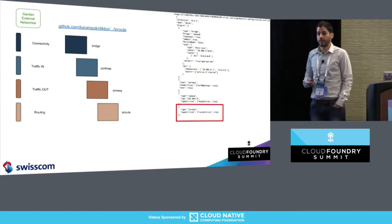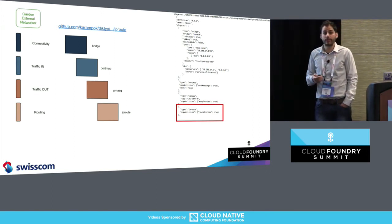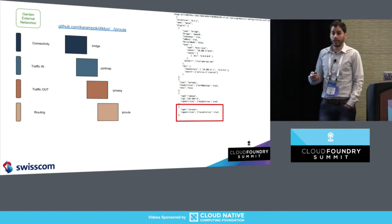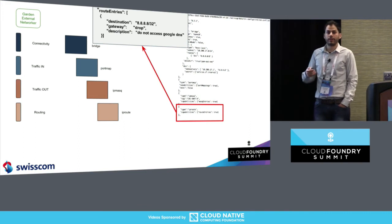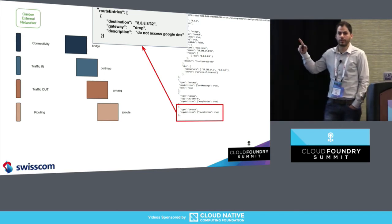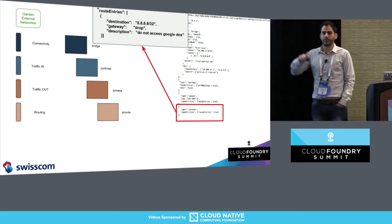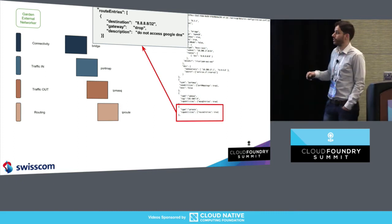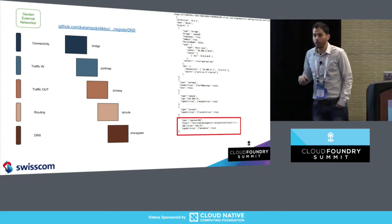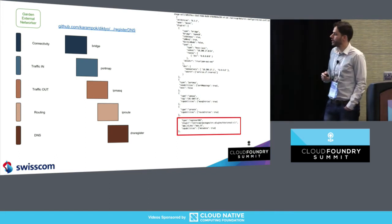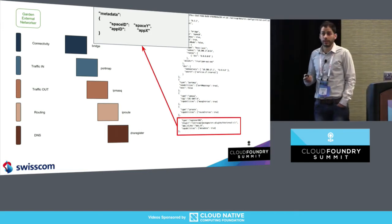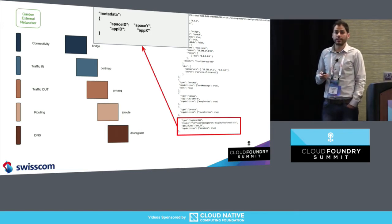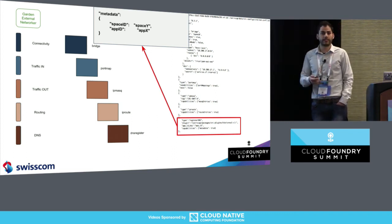I did another plugin that I called IP route. What it does is basically control the routing table of the container. What I had in mind when writing this plugin is whether I can replace the application security groups to use the routing table instead of IP tables for performance reasons. I kept going and created another binary I call DNS register. What it does is take the metadata of the container — the application ID — and register itself to the Consul that already exists in Cloud Foundry.